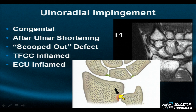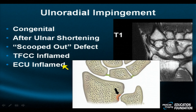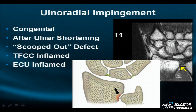Another impingement you may encounter that is less common is ulnar radial impingement. This occurs with a very short ulna, resulting in a scooped-out defect of the radius or extensive deformity of the ulna. The TFC itself is usually intact, but the attachments — known as part of the TFCC — may be inflamed. The extensor carpi ulnaris is frequently inflamed. You may see this as a congenital phenomenon or after an ulnar shortening procedure.